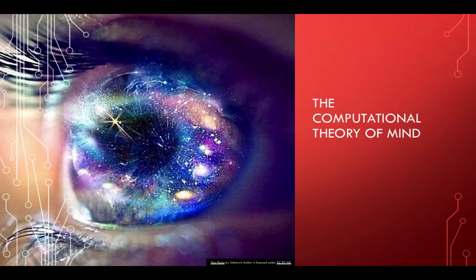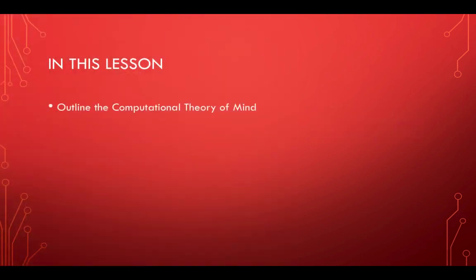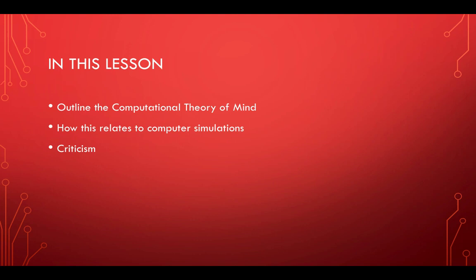In this lesson, we're going to take a detour and have a look at the computational theory of mind. This is very important when we're looking at computer simulations, and we're going to outline just how difficult it's going to be to come to any kind of definitive answer regarding computer simulations. We're going to outline and explain the computational theory of mind, look at how it relates to computer simulations, and then look at criticism — and explain why the criticism doesn't really solve the problem or show anything we don't already know.